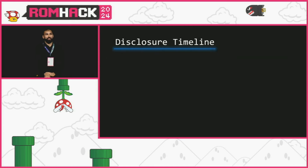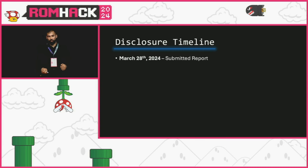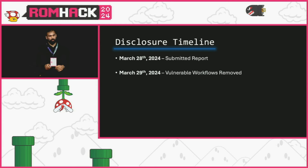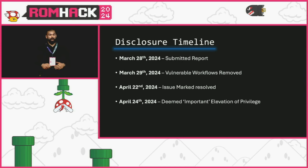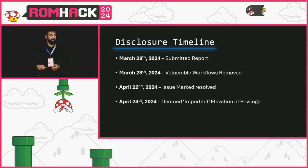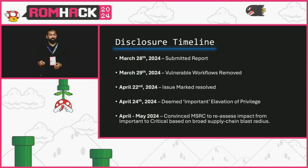The disclosure went pretty well. Back in spring I submitted a report, they quickly actioned it and removed the vulnerable workflows, marked everything as fixed, and I got an email saying it was deemed important — elevation of privilege. I thought it was more than important, and I was actually able to convince MSRC to upgrade it to critical — I didn't know that was even possible, but it happened.